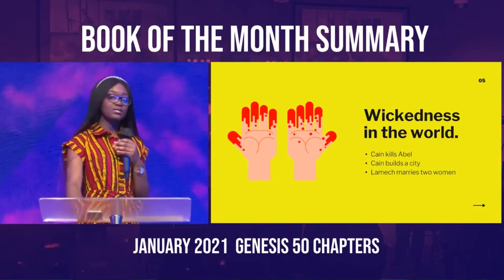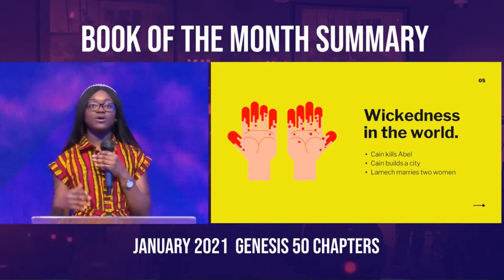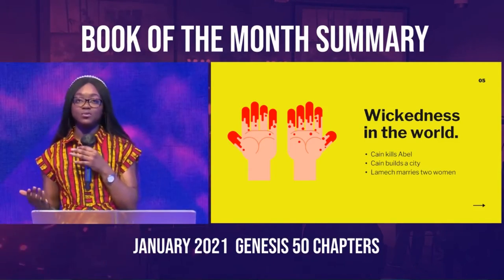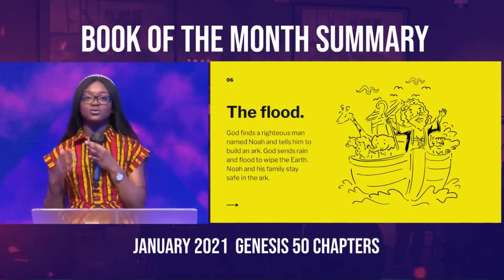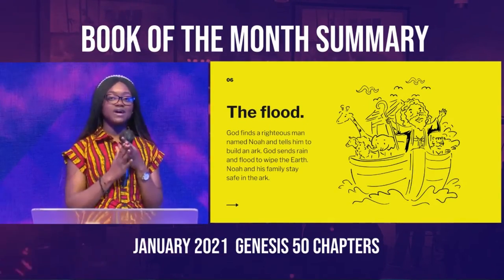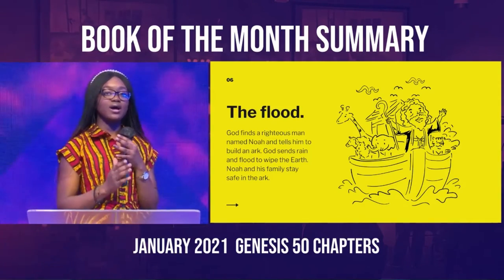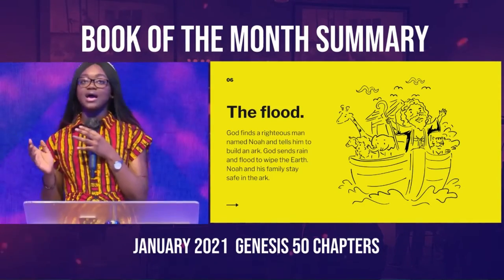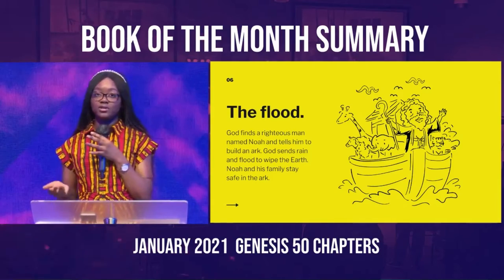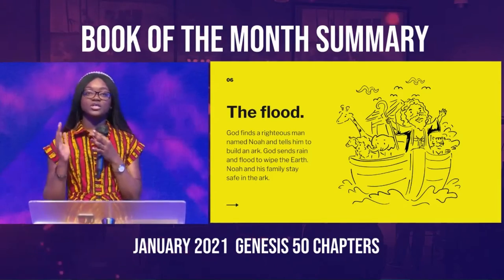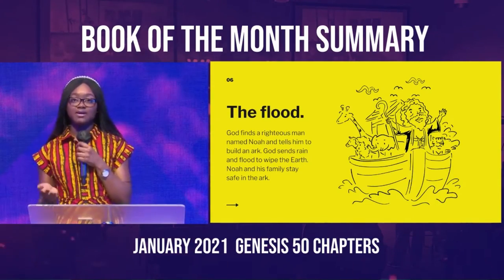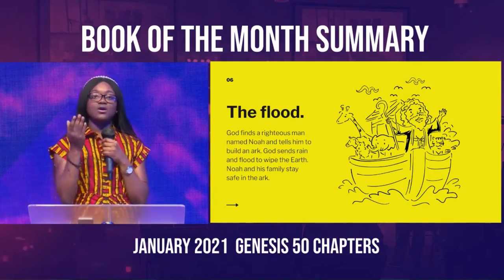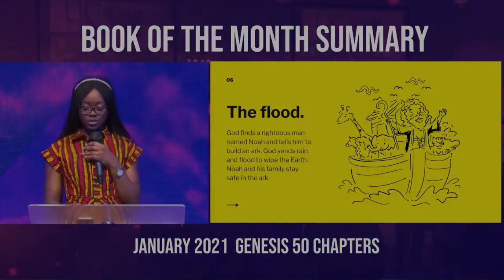God became very upset with what was happening in the world and decided to wipe the earth. He spoke to Noah, told him to gather his family and get people on the ark that he built, and he wiped the world with a flood — which he promised not to do again. But Noah and his family survived, and this was how the world was able to continue.